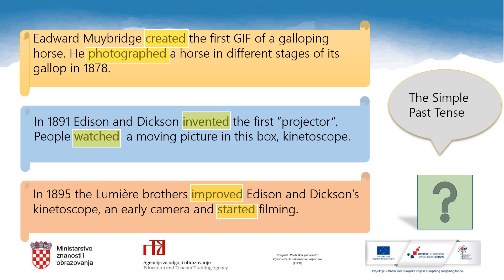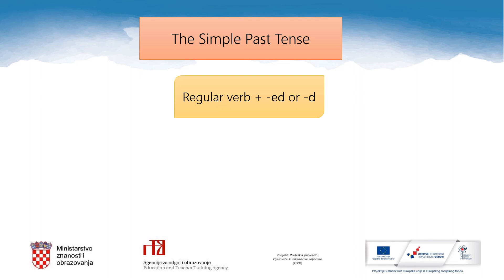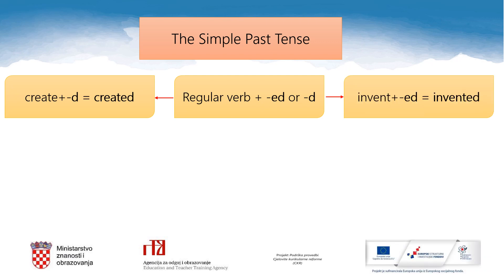Take a look at these verbs. What do they have in common? How do we form the simple past tense? The simple past tense se tvori tako da se na pravilni glagol doda nastavak -ed ili -d. Kada ćemo dodati nastavak -d? Kada glagoli završavaju na -e, doda se nastavak -d: create → created. Kada glagoli završavaju na zatvornik, kao što je 'invent', onda treba dodati nastavak -ed: invented.